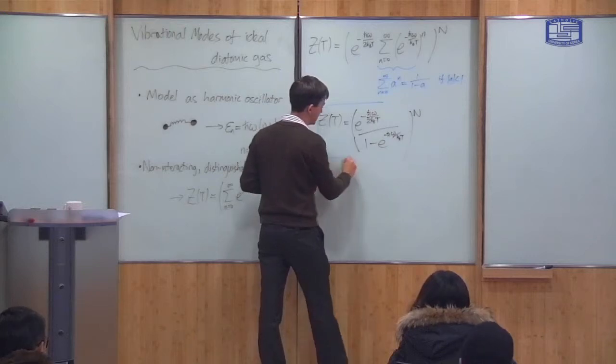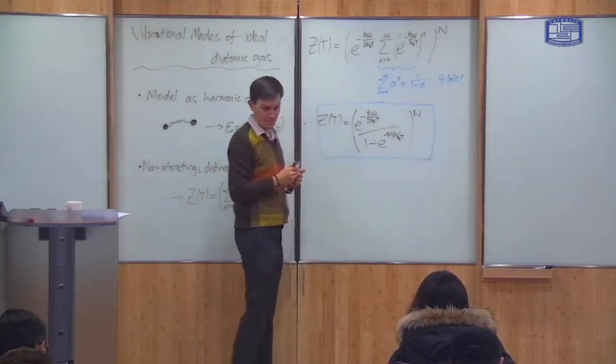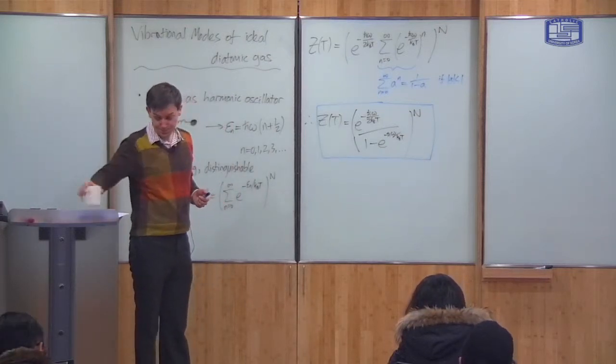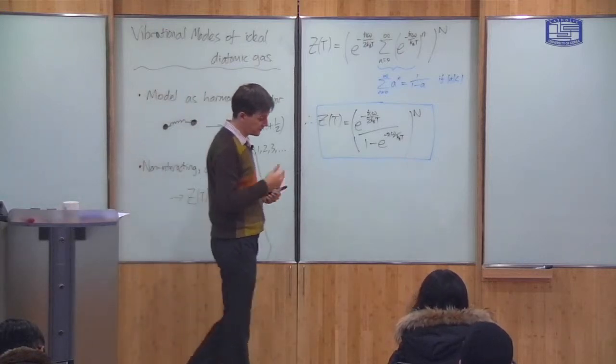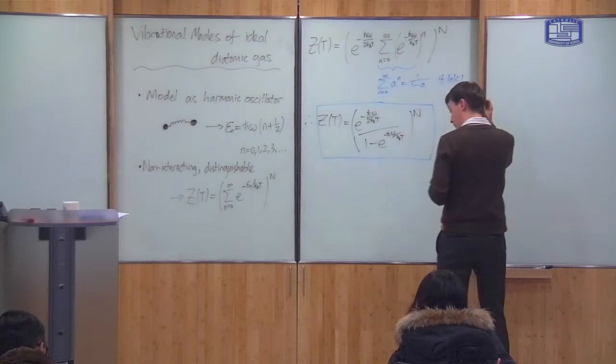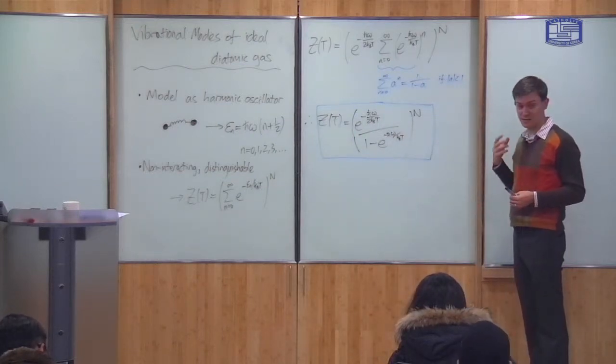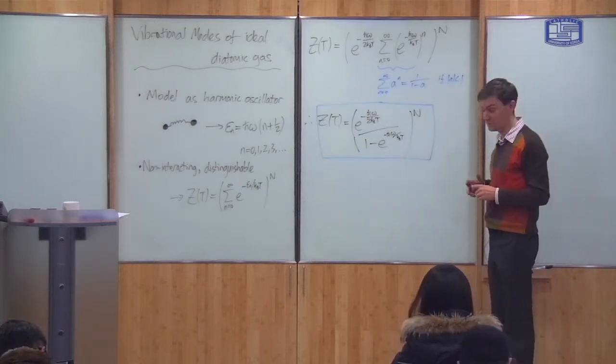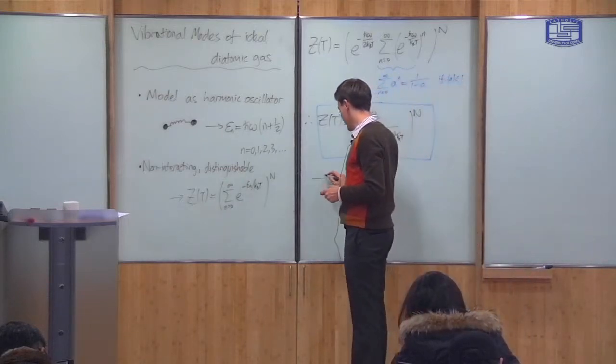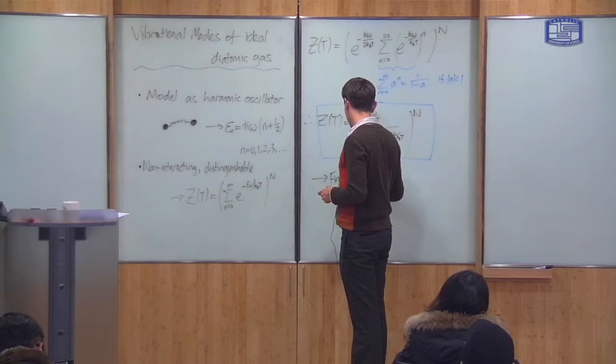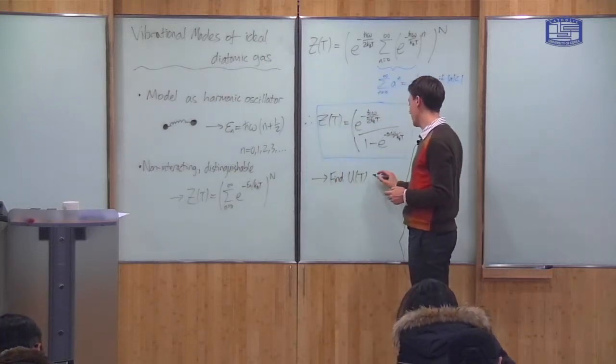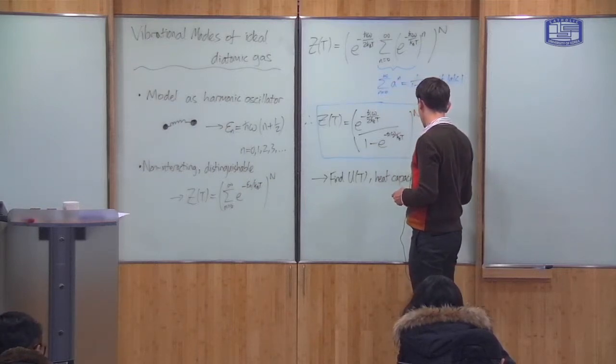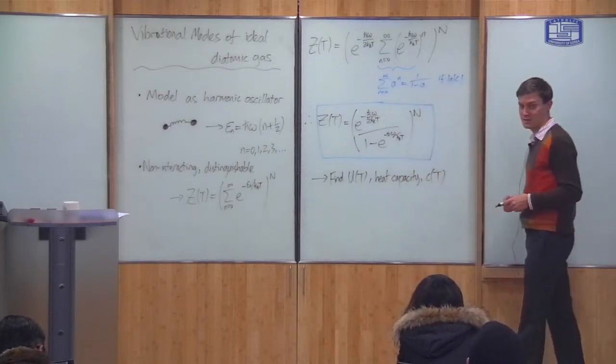And this is an exact calculation. We haven't made any approximations. What we're most interested in is the internal energy. How much energy do these vibrations hold? And secondly the heat capacity of these vibrations. So what we want to do with this formula is find the internal energy stored in the vibrational part and the heat capacity, which I'll just call C.